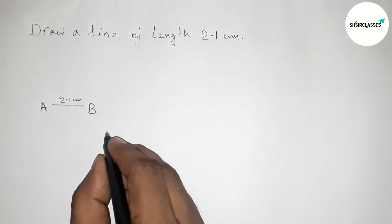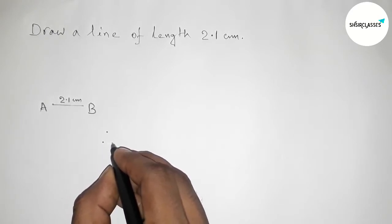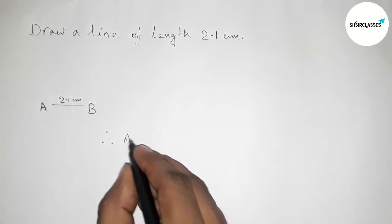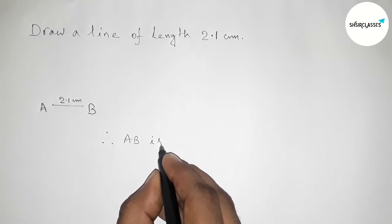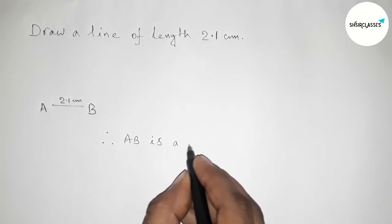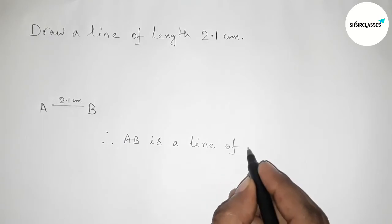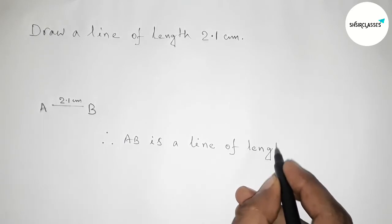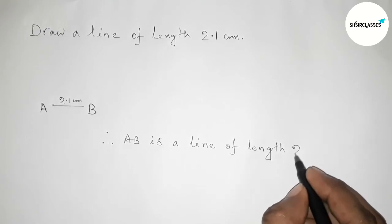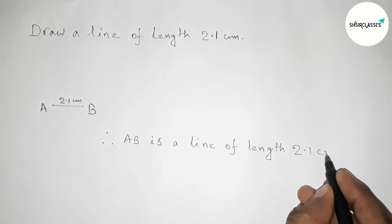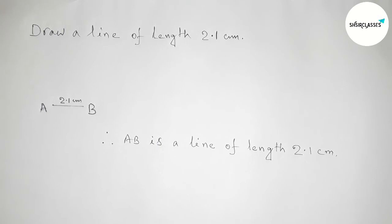AB is a straight line here, so AB is a line of length 2.1 centimeter. And by this way we can draw a line of length 2.1 centimeter in easy way. That's all, thanks for watching, please share it.